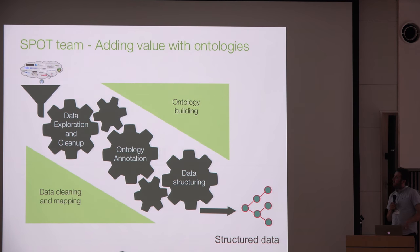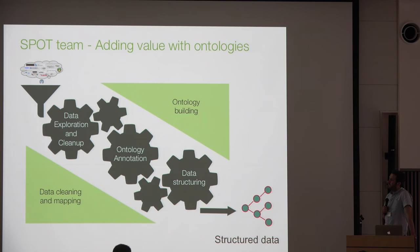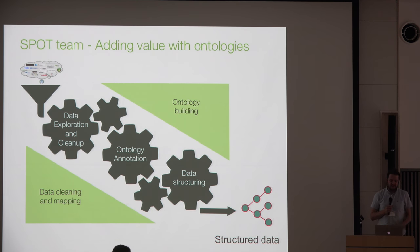This is how I see what we do in the SPOT team. We suck in data from all the different resources at the EBI and try to add value to those data. We have curators who do clean-up and exploration of these datasets to understand what's being described in the metadata, and we do a lot of ontology annotation and restructuring of that data. Through this pipeline we hope to get more structured, more semantically meaningful data out at the end.